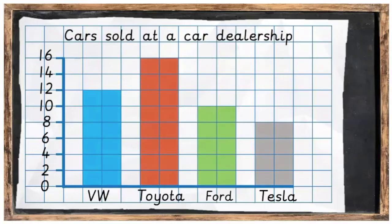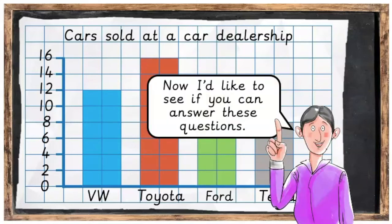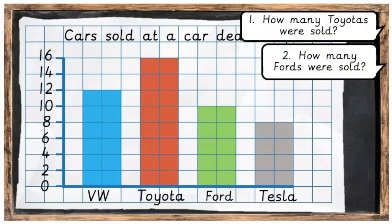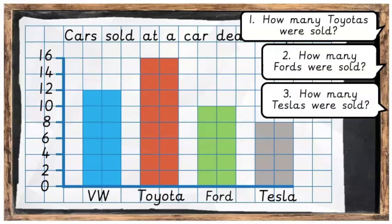Which resulted in a bar chart looking like this. Now I'd like to see if you can answer these questions. Question 1: How many Toyotas were sold? Question 2: How many Fords were sold? Question 3: How many Tezas were sold? Press pause, see if you can answer these questions, then press play when you are ready.